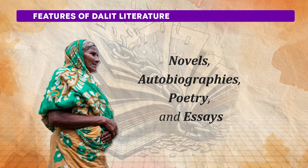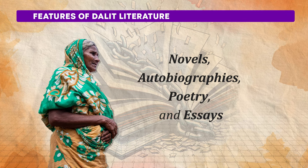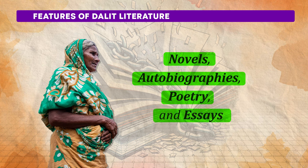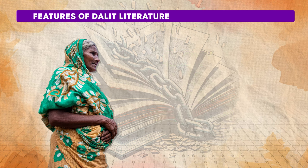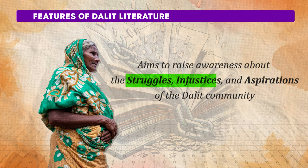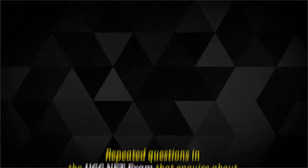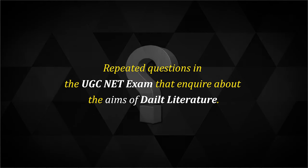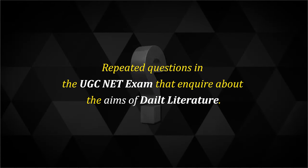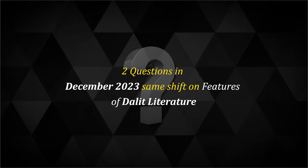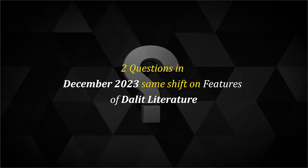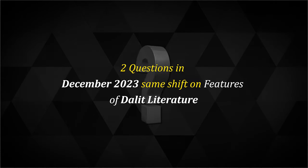This form of literature encompasses various literary forms including novels, autobiographies, poetry, and essays, each serving as a powerful medium to convey the narratives and experiences of Dalits. Through these diverse forms, Dalit literature aims to raise awareness about the struggles, injustices and aspirations of the Dalit community, shedding light on their lived realities. There are repeated questions in the UGCnet exam about the aims and features of Dalit literature — two such questions appeared directly in the December 2023 exam.